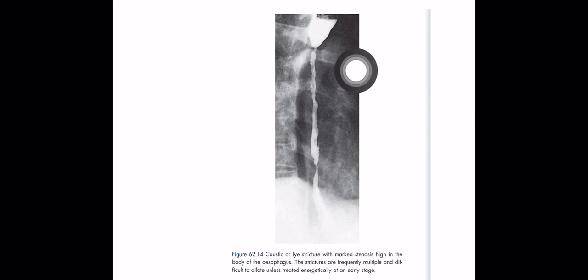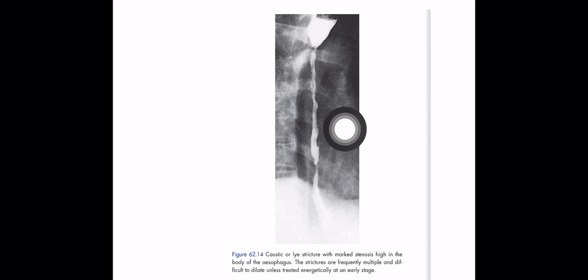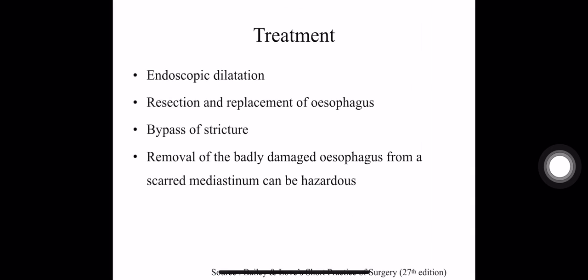In this finding you can see multiple stricture formations due to corrosive injury. You can do endoscopic dilatation, or surgery by resection and replacement of the esophagus, or bypass of the stricture. However, removal of the badly damaged esophagus from the mediastinum is hazardous, so early surgery is necessary.